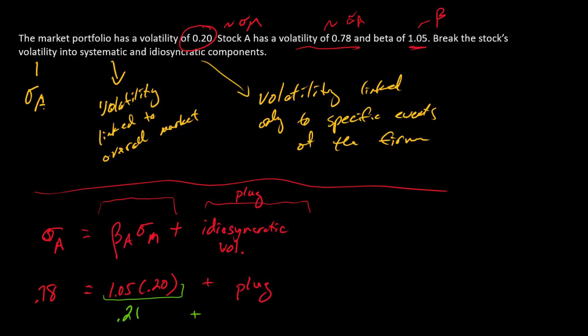What about the idiosyncratic? Well, it's whatever is left over, so I've got to get back to 0.78, so 0.78 minus 0.21 or 0.57. So there's our decomposition right there.